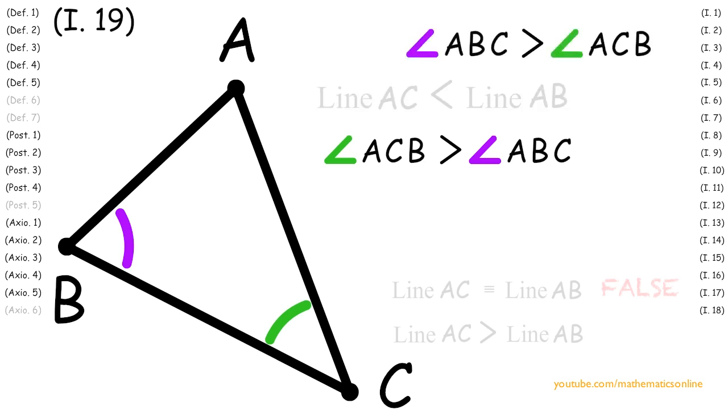But we also have that angle ABC is greater than angle ACB. Again, this is a contradiction. Therefore, the statement line AC is less than line AB is false.